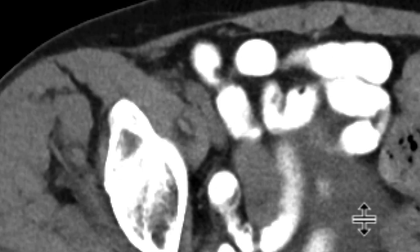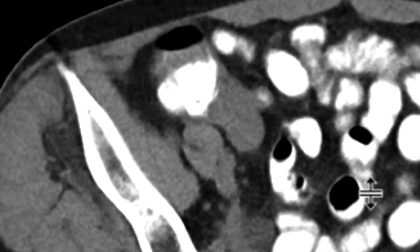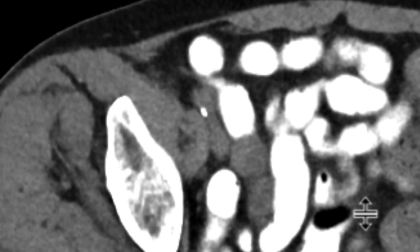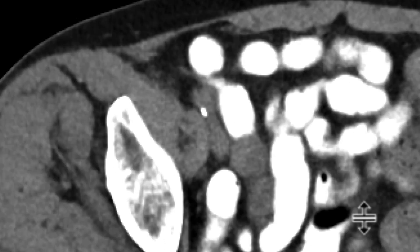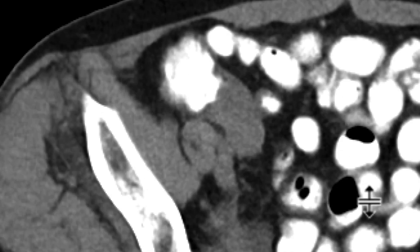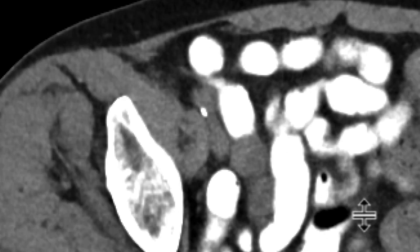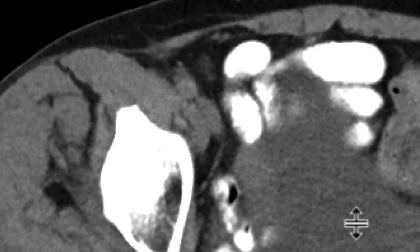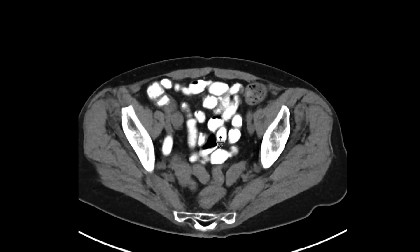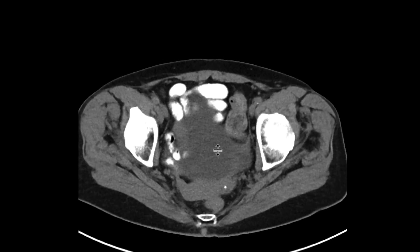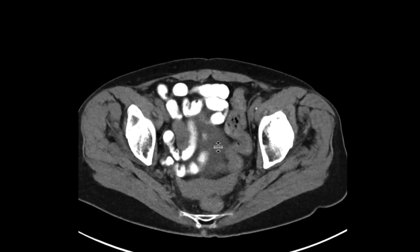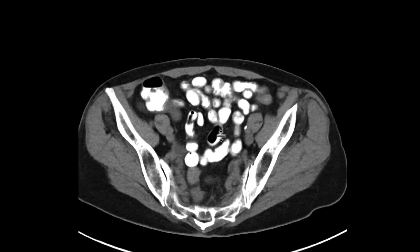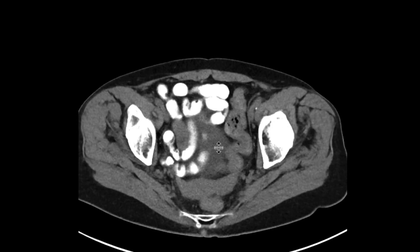That's going to be the appendix, and it's filled with this soft tissue. There's no inflammatory change around it to suggest acute appendicitis, but rather, when you see this sort of soft tissue, we worry that there's an underlying neoplasm resulting in a mucocele. This ended up being resected, and it was a moderately differentiated adenocarcinoma of the appendix.